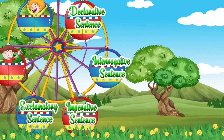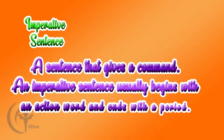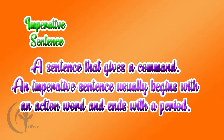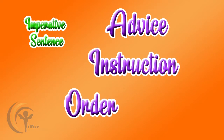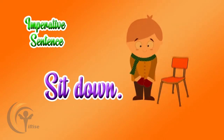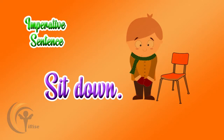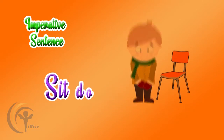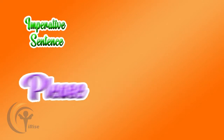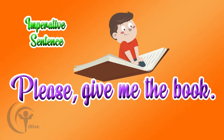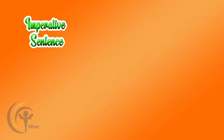An imperative sentence is very simple — it's simply a command. It starts with an action word and ends with a period. An imperative sentence may appear in different forms: it can appear as an advice, an instruction, or an order. So if I say, 'Sit down,' this is an imperative sentence where I'm giving an order. If I also use courtesy words such as please and say, 'Please give me the book,' that is an imperative sentence. A final example may be, 'Kindly take care of yourself.'